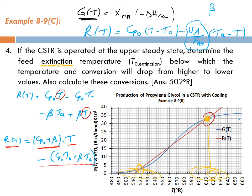If we change T0, would that affect the slope? Obviously not, because CP0 is not a function of T0, nor is beta — beta is U times A divided by FA0. So the slope will not change. The intercept will change because T0 appears there. That means the new RT line, if T0 changes, will be parallel to the original RT line.